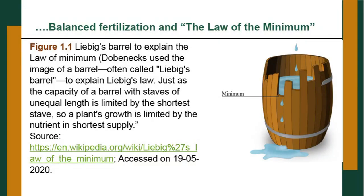An example: if you have all food items — salad, roti, chapati, rice, dal, sabji — but you forgot to add salt, the food is useless. Similarly, plants need 17 essential elements; if one is absent, the others cannot be properly utilized. This was illustrated by Liebig's barrel, also called Dobeneck's barrel: just as the capacity of a barrel with staves of unequal length is limited by the shortest stave, plant growth is limited by the nutrient in shortest supply.